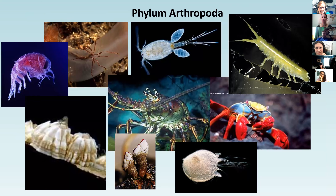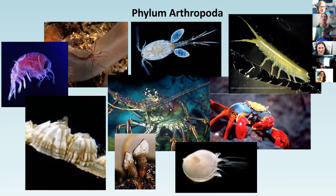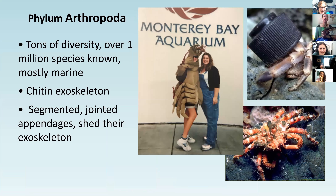Next we have Arthropoda - a huge group of organisms including barnacles, plankton, ostracods, isopods, copepods like Plankton from SpongeBob, lobsters, and crabs. There's an enormous diversity of arthropods - over a million species, a lot of them marine. They all have a chitinous exoskeleton that they shed periodically. 'Arthro' means segmented or jointed and 'pod' means foot, so they all have segmented or jointed feet.